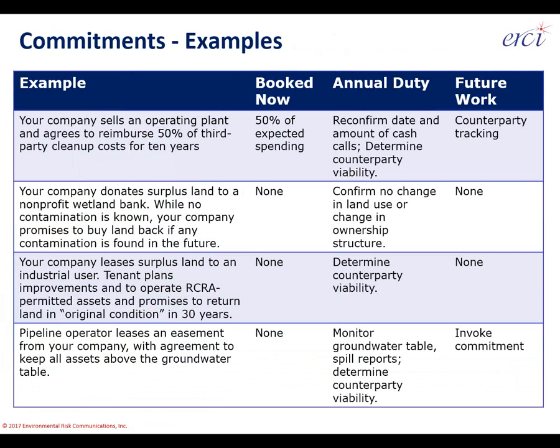Second example: your company donates surplus land to a nonprofit wetland bank. While no contamination is known, your company promises to buy it back if any contamination is found. What would you book today? Strictly speaking, nothing — you have no indication of any problem. But over time you have an annual duty to ensure no one is reusing the land, that there's been no spill or accident, and to understand any changes in zoning or land ownership structure. Check this every one to three years, as that's enough time for counterparty risk to set in.